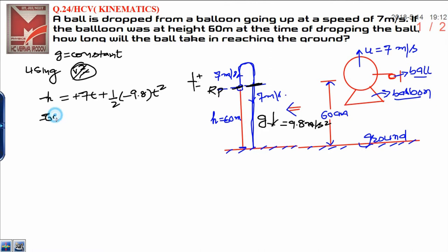Now put the value of h, that is 60, which is equal to 7t minus 4.9t squared. It is a quadratic equation. If it is a quadratic equation, you can write 4.9t squared minus 7t minus 60 is equal to 0.